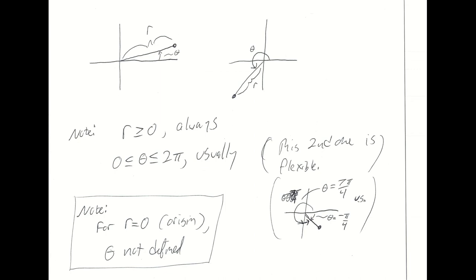We will always take r greater than or equal to zero, and generally think of theta as between zero and 2 pi. That rule is bendy — it is sometimes useful to think about negative values of theta. If you're dropping back into the fourth quadrant, instead of wrapping all the way around, you might think of a negative theta. For a point on a 45-degree angle in the fourth quadrant, that could be theta equal to 7 pi over 4, or equivalently negative pi over 4. Both conceptions are useful.